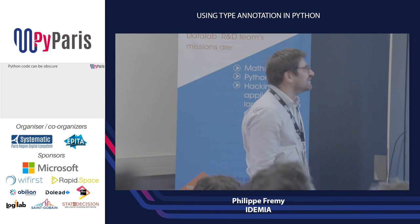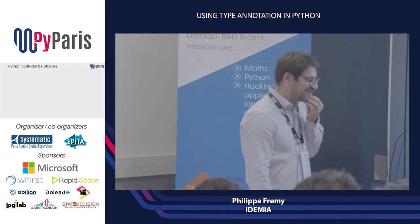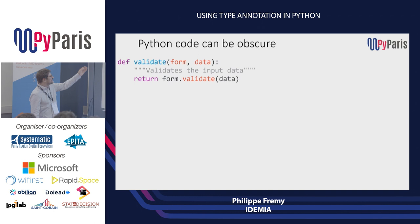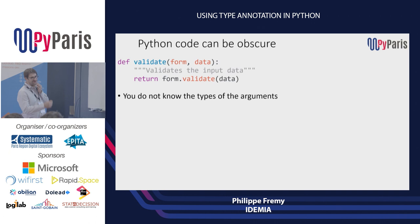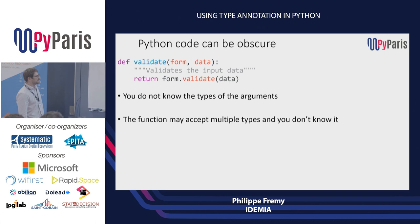One problem you may have with Python sometimes is that the code can be obscure. For example, there's a function called 'validate'. It takes an argument, a form — usually HTTP or web stuff — and some data. It does form.validate and calls data. You don't know what the possible forms are, you don't know the types of data. So you're a bit lost. And maybe the function accepts multiple types of data and you don't know it, so you're not sure what exactly it should be called with.